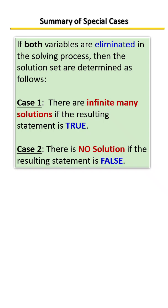Just a recap of those special cases when both variables cancel out. If both variables are eliminated in the solving process, then the solution sets are determined as follows. Case number one: if the variables cancel out and leave you with a true statement, then that means that there are infinitely many solutions. And if the variables cancel out and leave you with a false statement, then that means there's no solution.